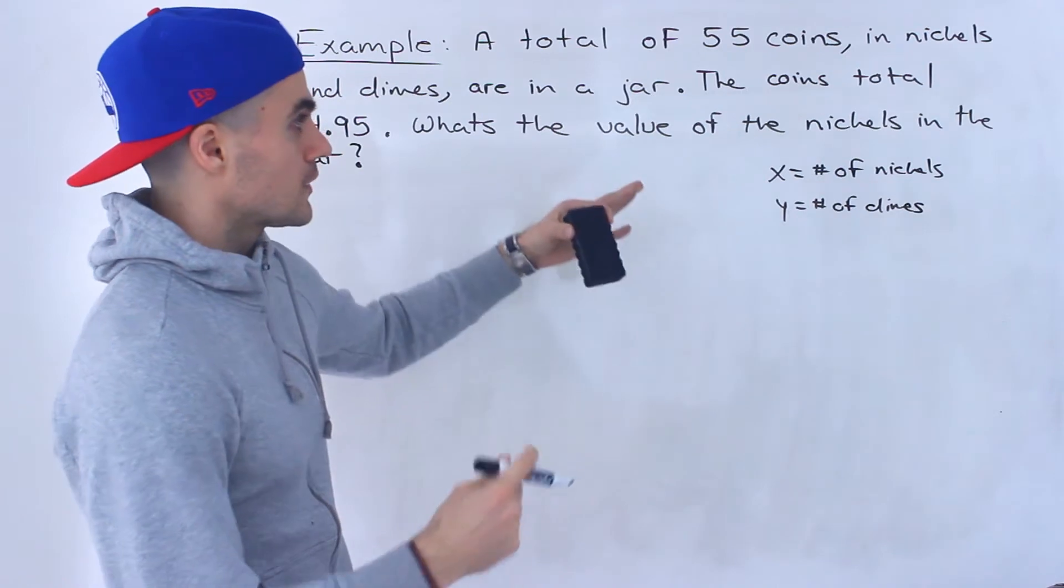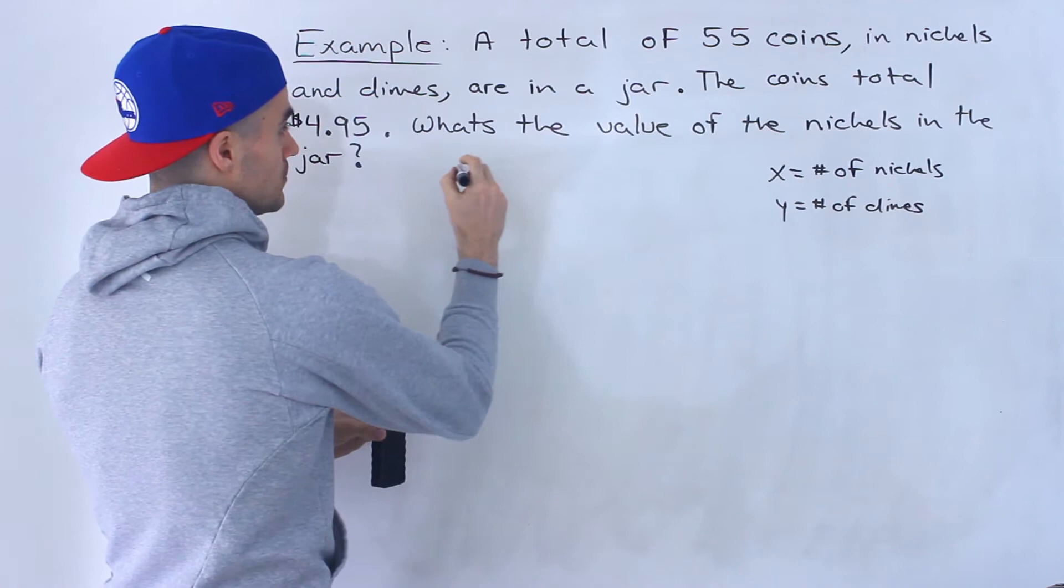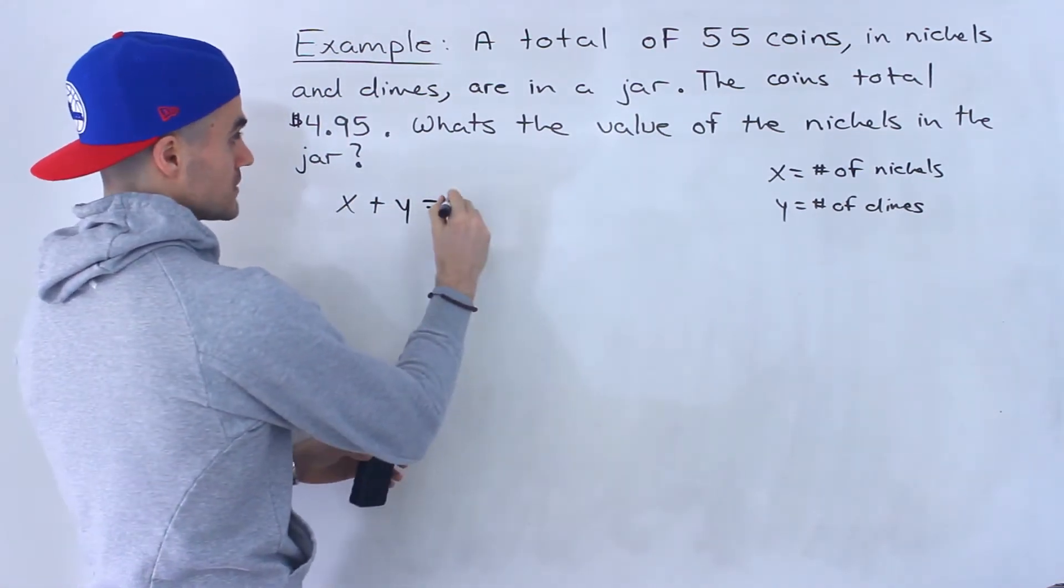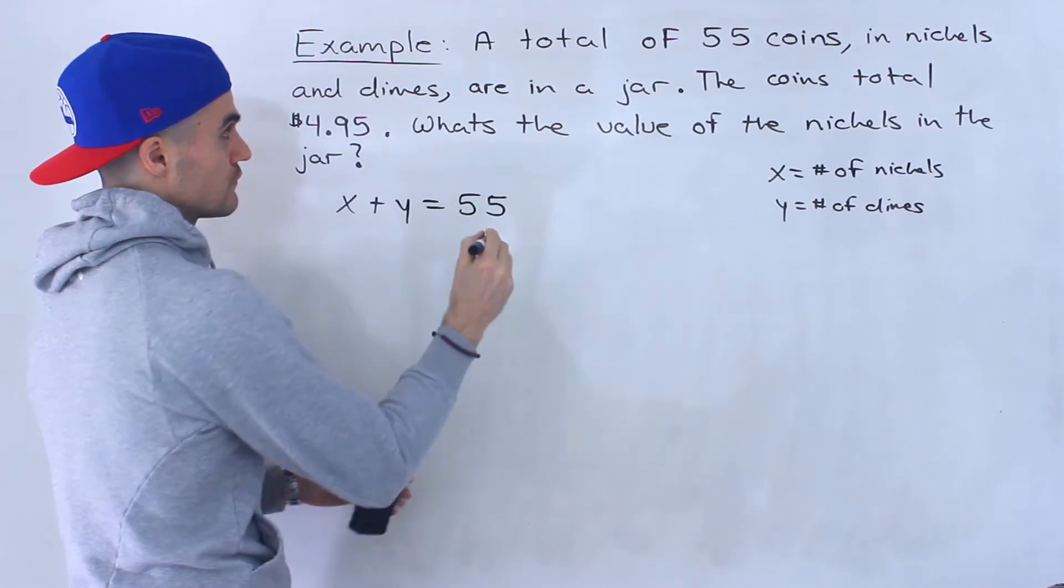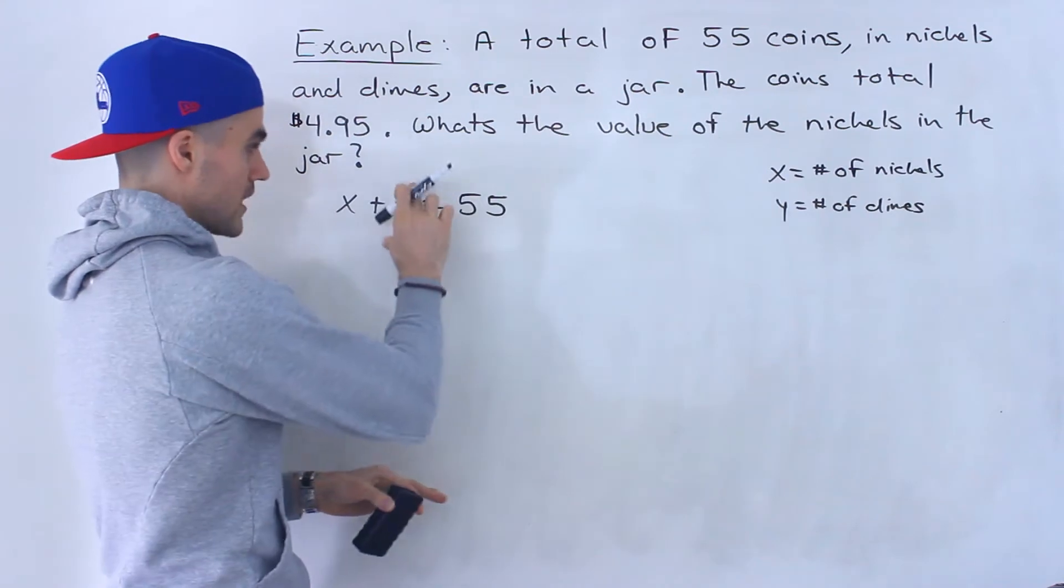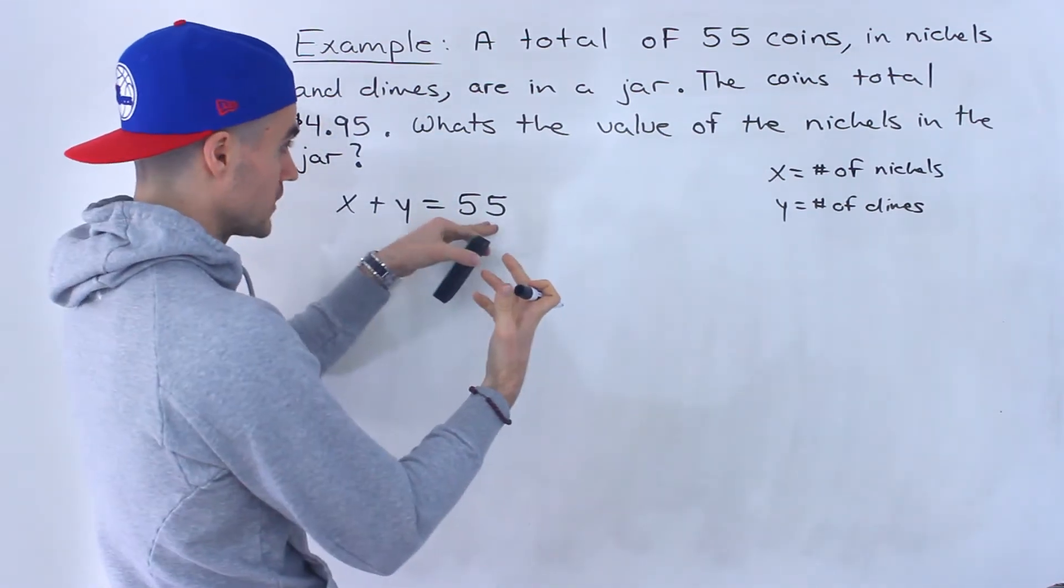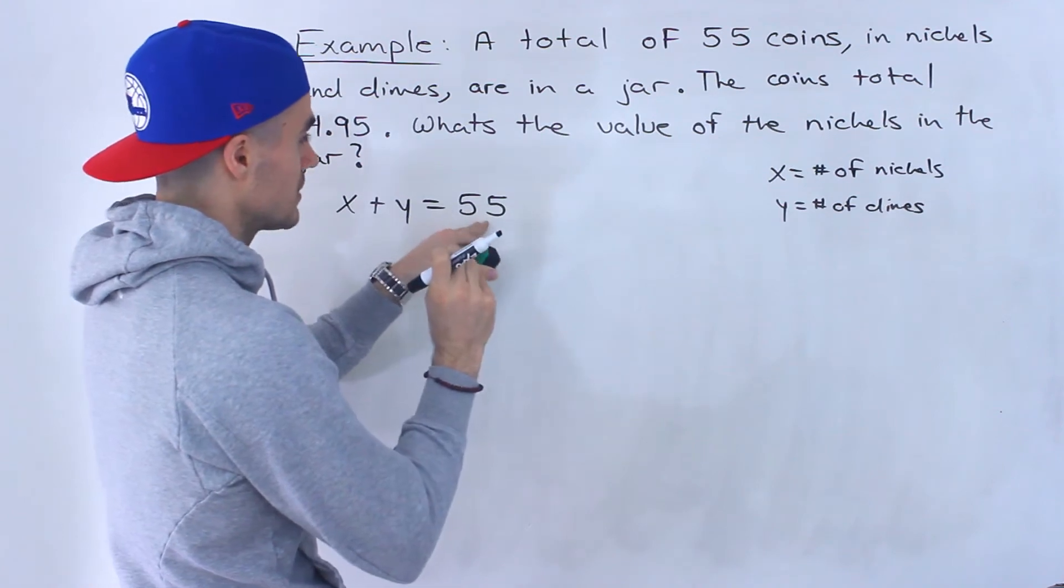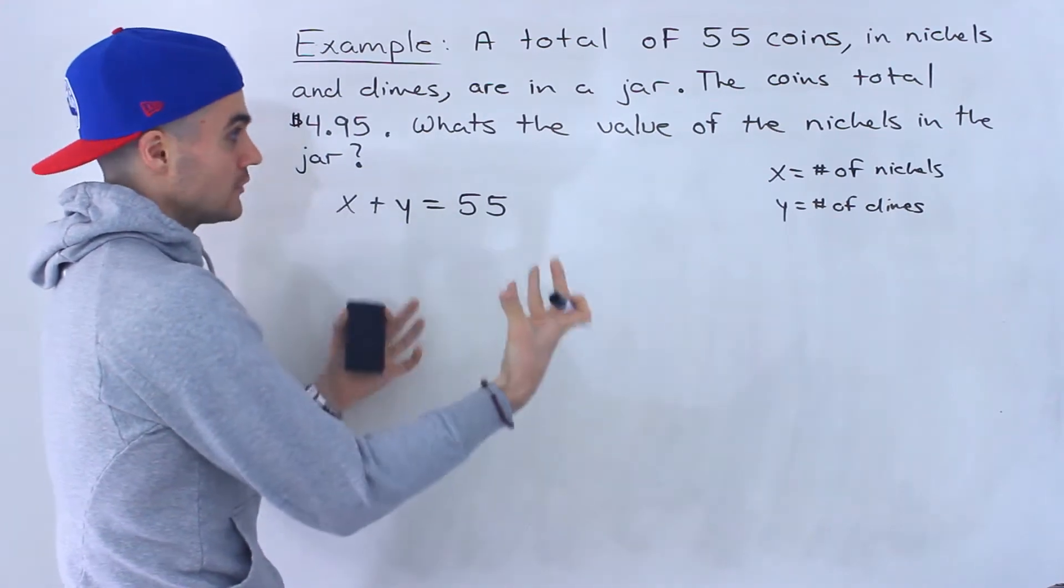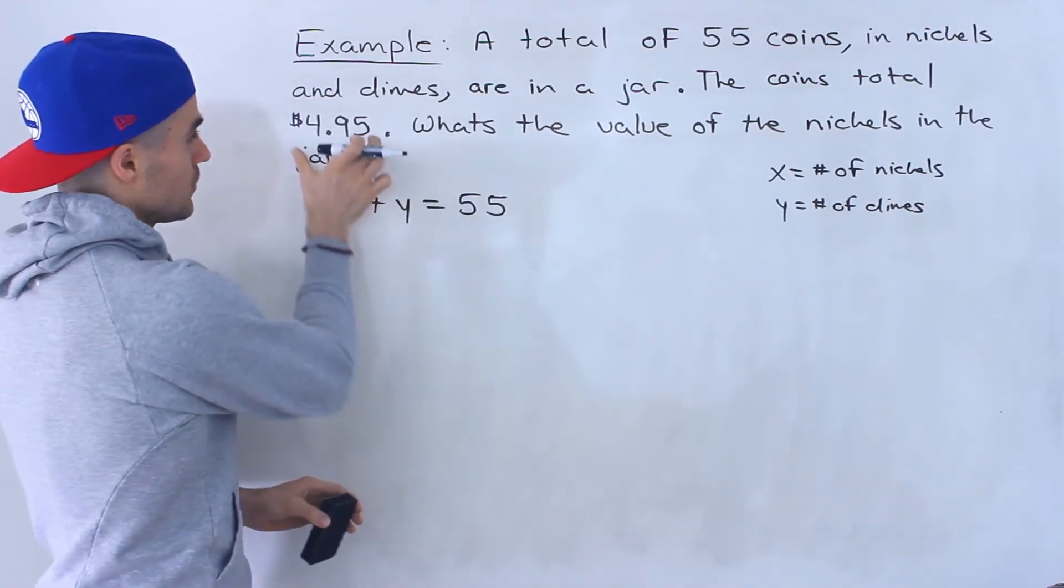So notice we could create two equations with this information. x plus y would be the total number of coins, 55, because the jar is just comprised of nickels and dimes. So x is the number of nickels, y is the number of dimes. So x plus y, the total number of coins, is going to be 55. Now the total value of them is $4.95. So how can we make an equation with that information?